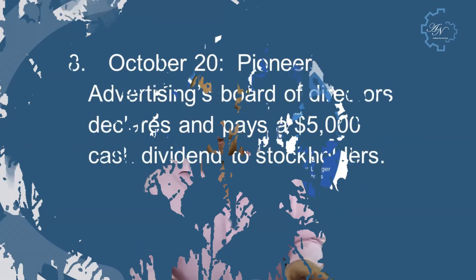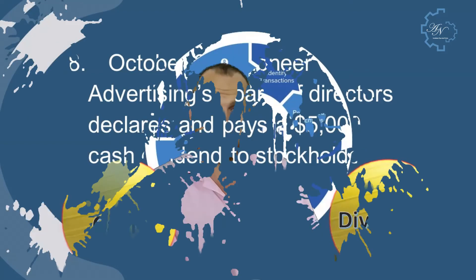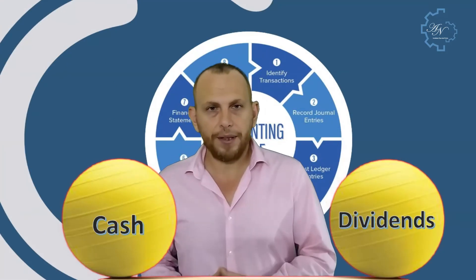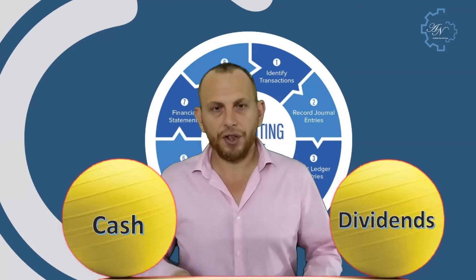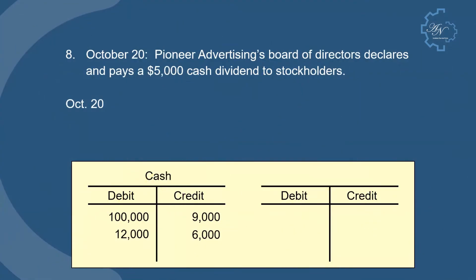October 20: Pioneer Advertising's board of directors declares and pays a $5,000 cash dividend to stockholders. Dividends decrease equity, and cash decreases assets. The entry is: debit dividends, credit cash. The posting looks like this.